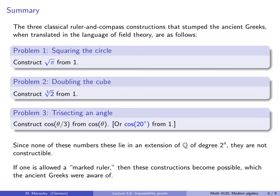Now, I should mention that if one is allowed to use a so-called marked ruler, which is just a straight edge with markings on the side that can be used in the construction process, then these three constructions become possible. And this is something that the ancient Greeks were aware of. However, you still need more information than just Euclid's three postulates.